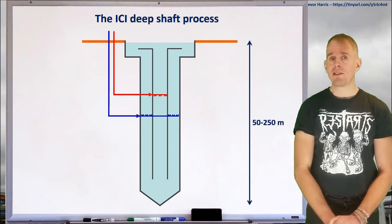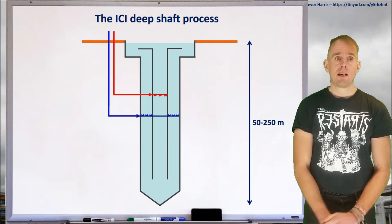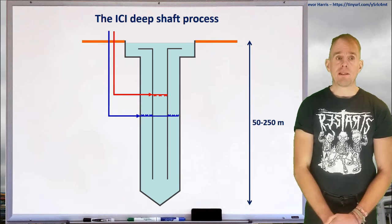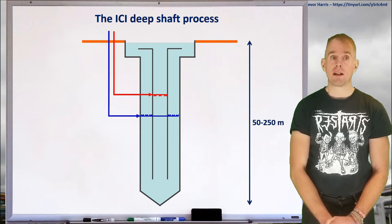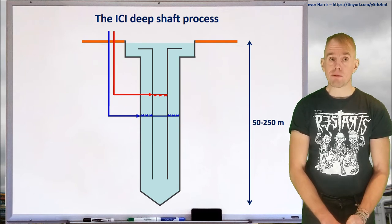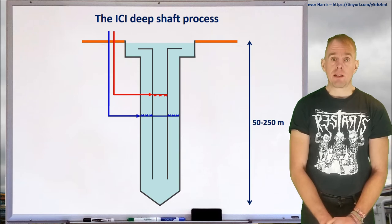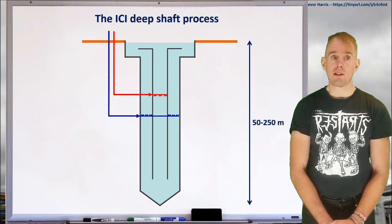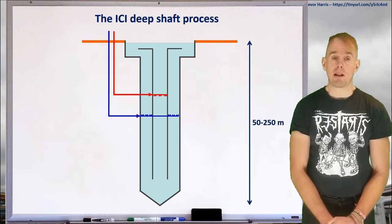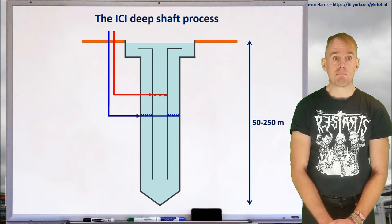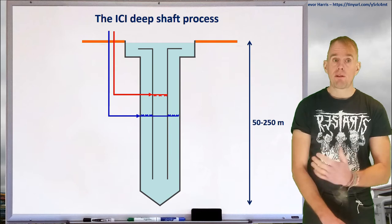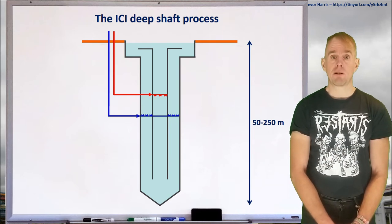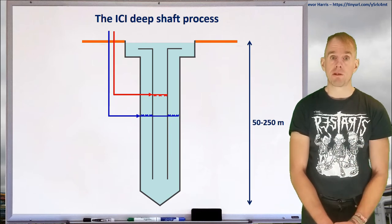So here on the whiteboard is a sketch of this process. This blue thing here is effectively a mine shaft. So the orange horizontal line at the top of the drawing is ground level and what you've done is you've taken a whole boring machine and dug into the earth and concrete lined it and you can dig down 50, 250 meters, something of that order.